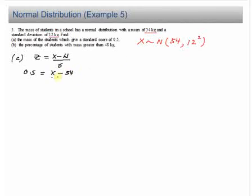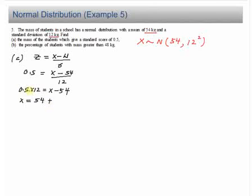Over the standard deviation which is 12. So 0.5 multiplied by 12 equals x minus 54, so x equals 54 plus 0.5 multiplied by 12, which is 6. So the value for x is 60 kg.